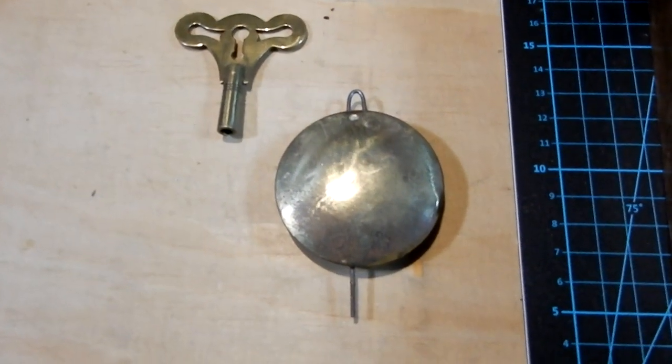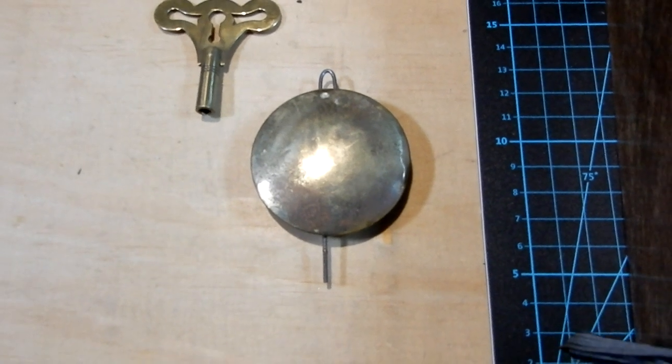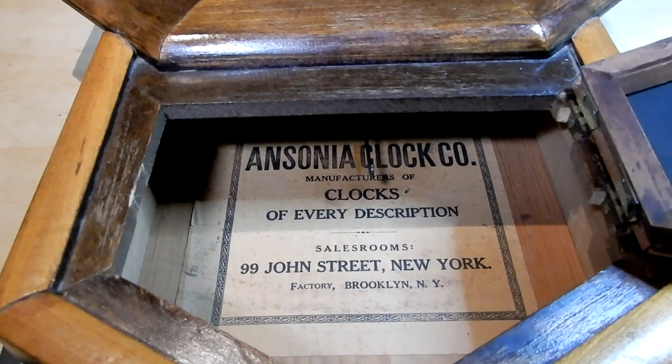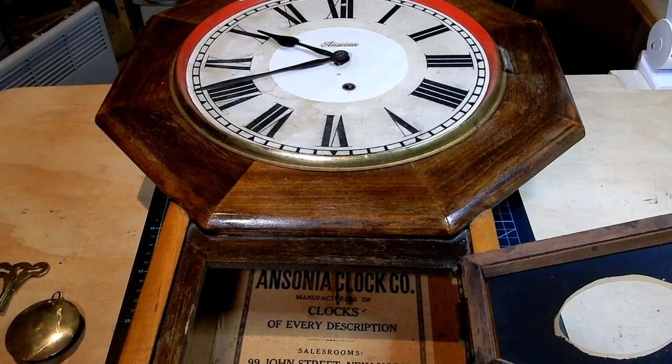There's the key. You'll see that the pendulum bob has not got a rating nut on it, so we'll have to get one of those before we finish. That's the clock label inside the clock. Let's start to take it to pieces.